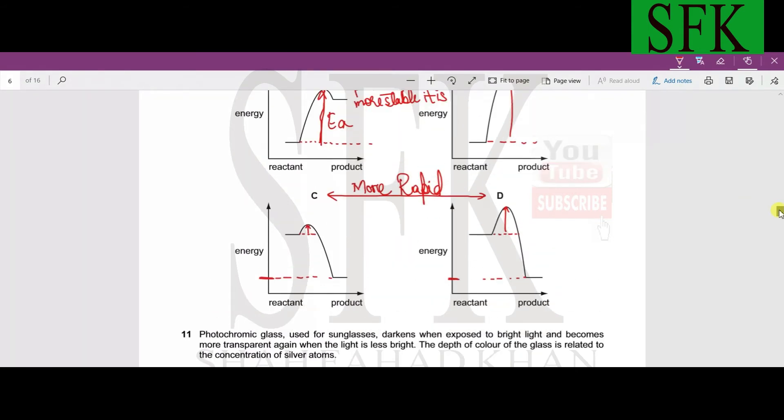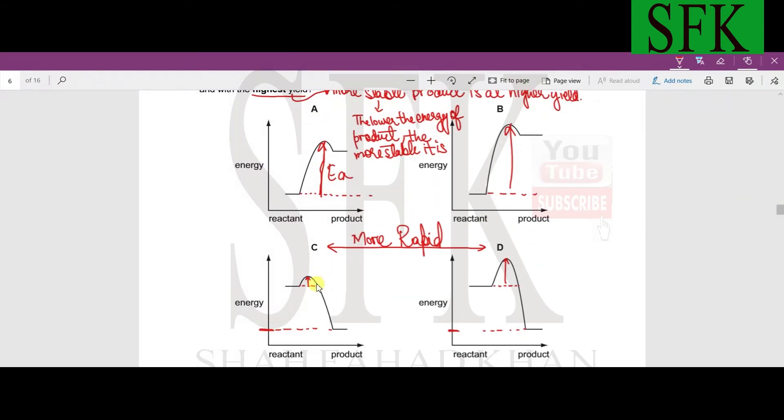If we look at option B and C, the arrows are relatively smaller. So it's C and D, the arrows are relatively smaller, so A cannot be the answer, B cannot be the answer. Now C and D.